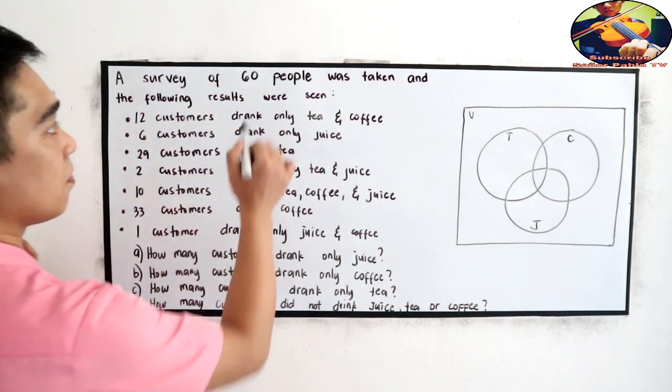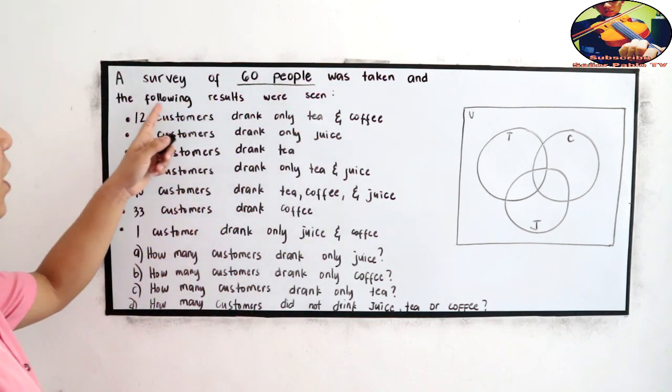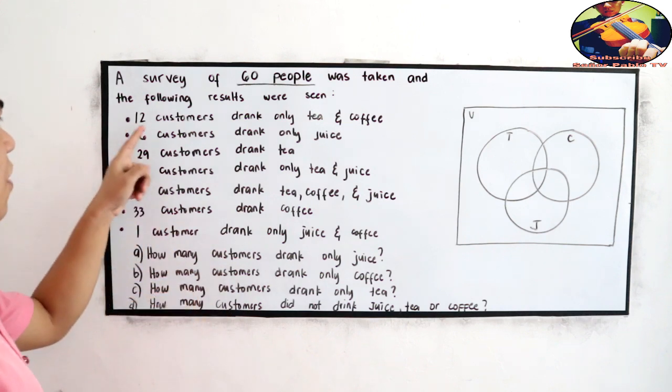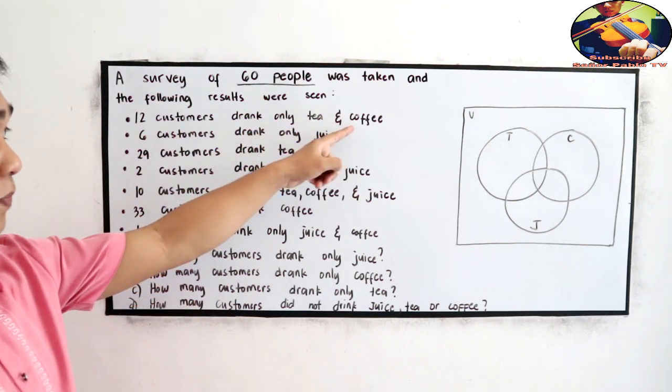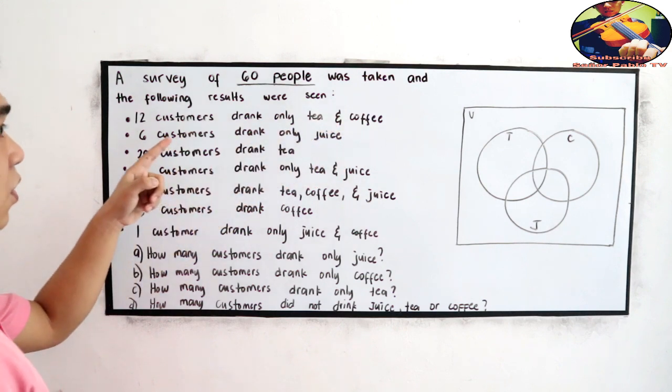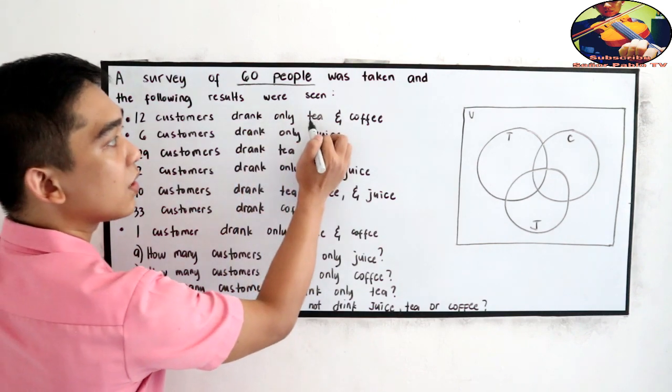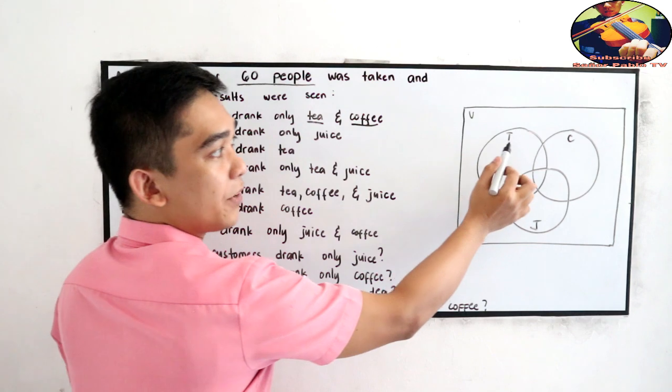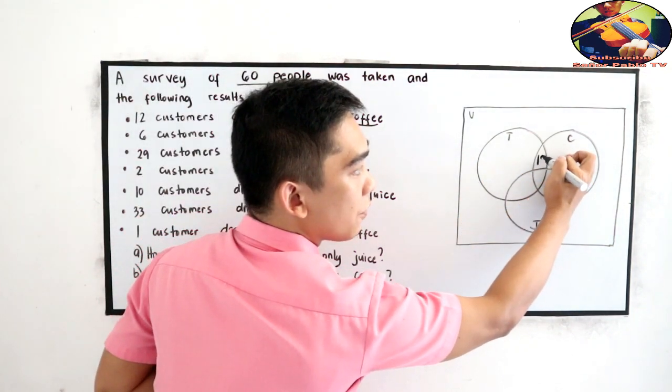60 people. And the following was seen. 12 customers drank only tea and coffee. So we're going to put 12 in the intersection of tea and coffee. Where is tea and coffee? Tea and coffee. So this is 12.